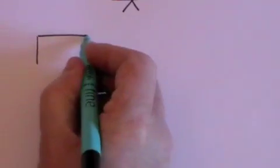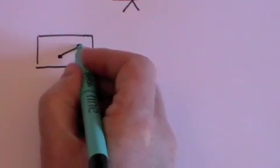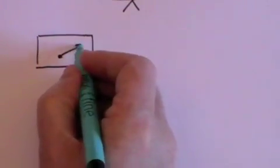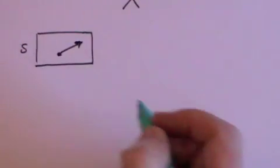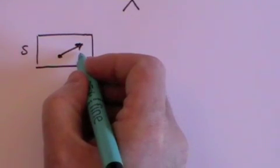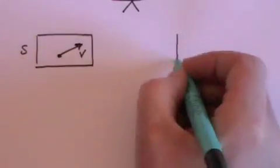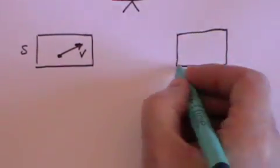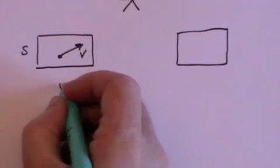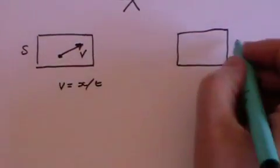Now let's look at what happens if S and S prime are observing a particle or anything else for that matter moving at a certain velocity. Let's suppose the particle is moving on S's frame of reference, and let's suppose that it is traveling, as far as S is concerned, at velocity v. v will simply be x, the distance traveled, divided by t, the time taken.